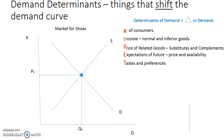T is for taste and preferences — do you like it or don't you? Maybe a celebrity is endorsing a product, or maybe research shows that a product is suddenly considered healthy or beneficial. For example, research might show that wearing shoes instead of sandals is better for your feet, and as a result, that would cause an increase in the demand curve for the market for shoes.